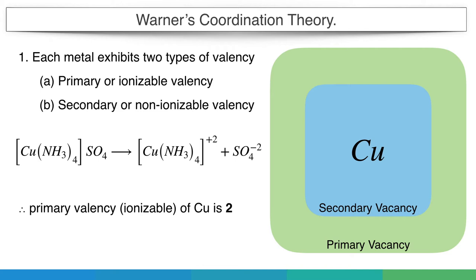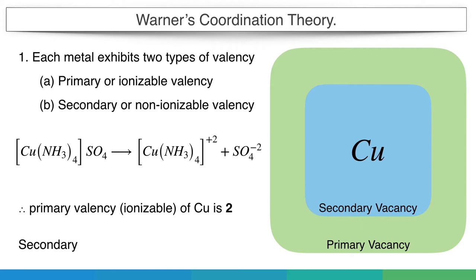In this case, primary valency of copper, the ionizable part, is 2 as the copper has plus 2 charge. And the secondary valency, the number of ammonia groups attached, the non-ionizable part, is 4.